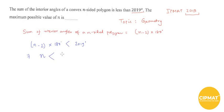We get 2019 divided by 180 plus 2, and if you solve this it will come out to be 13 point something. So since n can only be a natural number as it is the number of sides of a polygon...